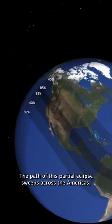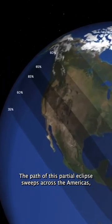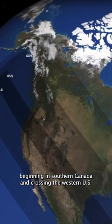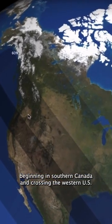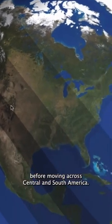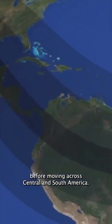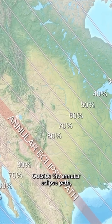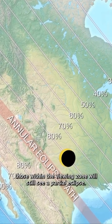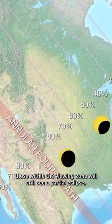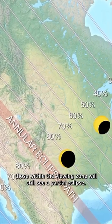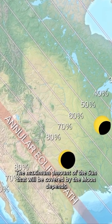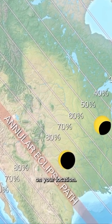The path of this partial eclipse sweeps across the Americas, beginning in southern Canada and crossing the western U.S., before moving across Central and South America. Outside the annular eclipse path, those within the viewing zone will still see a partial eclipse. The maximum amount of the Sun that will be covered by the Moon depends on your location.